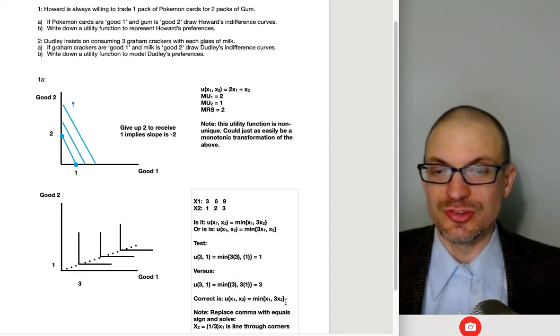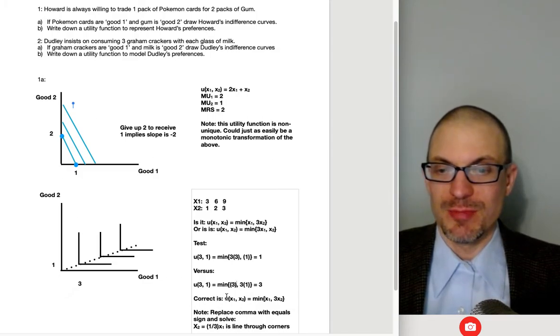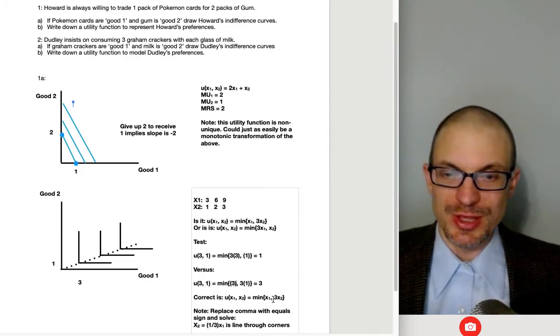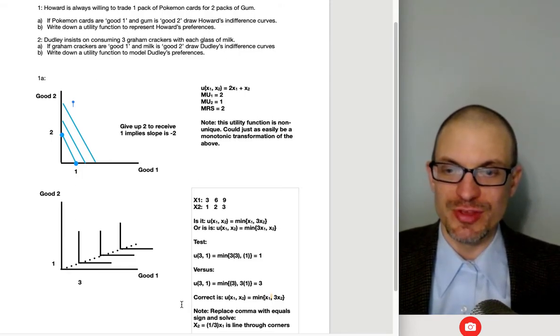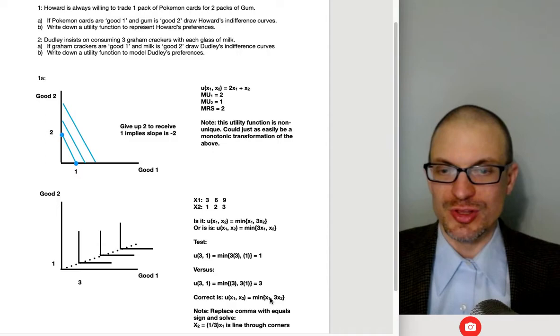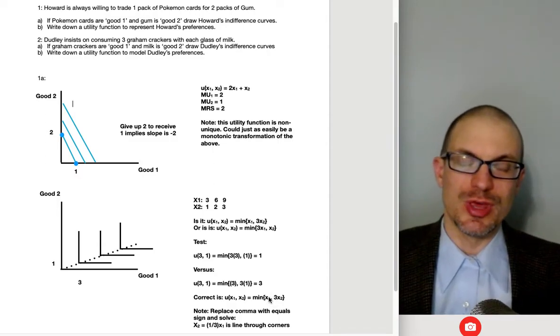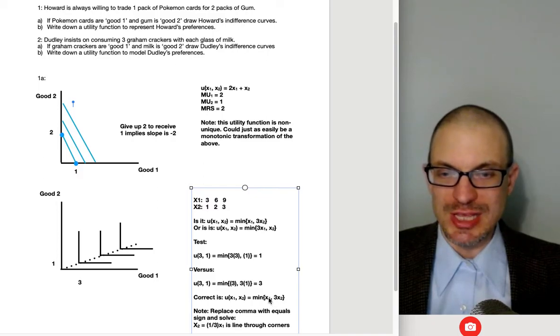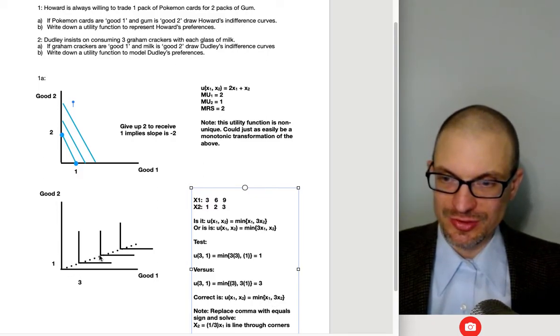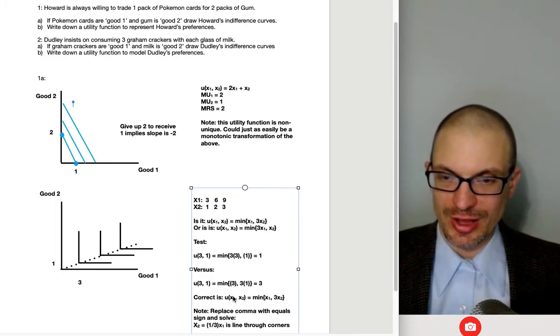Okay, so this is the correct utility function. And my last comment here is, look, you can replace this comma with an equal sign. And this is going to be important. Ultimately, like the way that we'll solve this is, firstly, we'll replace the comma. The way that we'd solve the optimization problem is you replace the comma with an equal sign here and solve for X2. That's going to give me the line. This is X2 equals one third X1. This is the line through the corners.